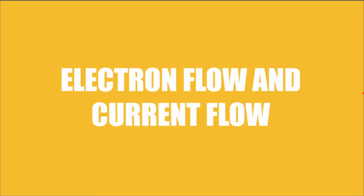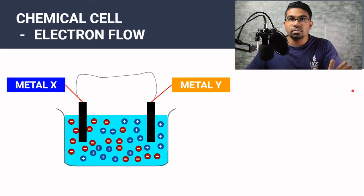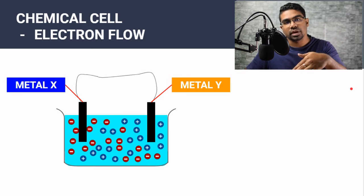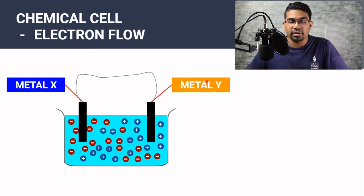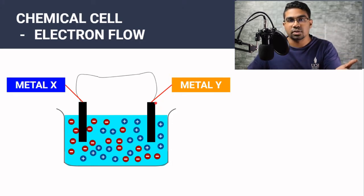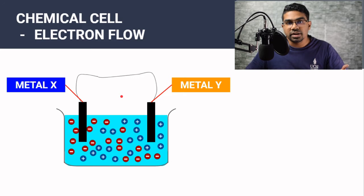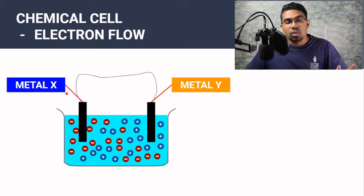In any electrochemical cell we must first understand where the electrons are flowing — if we can understand the electron flow, we can deduce everything else. The chemical cell is made of two different types of metals as the electrodes. Different metals have different tendencies to donate electrons, known as electropositivity. The way to determine which metal is more electropositive is by referring to the electrochemical series.